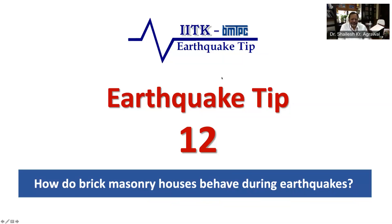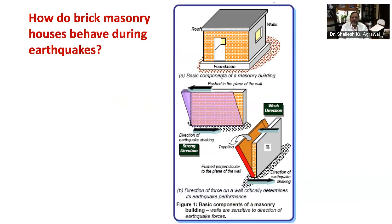Masonry buildings comprise three components: roof, walls, and foundation, as shown in Figure 1A. Ground vibrations during shaking cause inertia forces at the location of mass in a building. These inertia forces travel through the roof and walls to the foundation. The main objective is ensuring that these forces reach the ground through these components without causing major damage or collapse. The walls of masonry buildings are most vulnerable to damage caused by horizontal forces due to earthquakes.